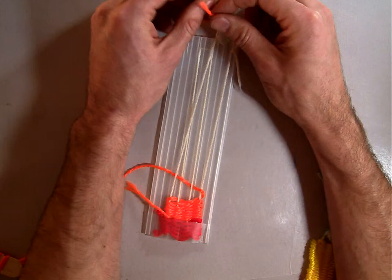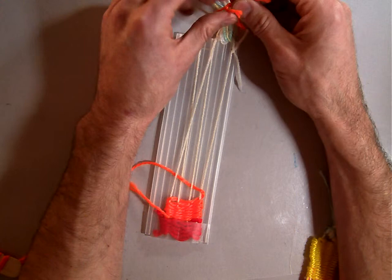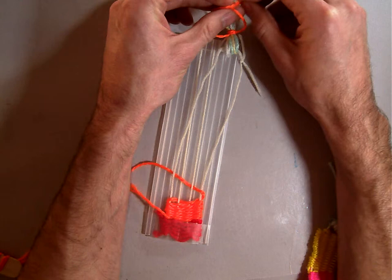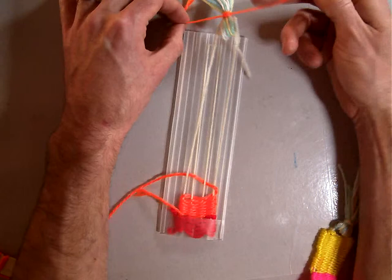You're going to tie a right hand over left hand and under, then pull it tight. And then you're going to take your left hand, this one, over your right hand and under the hole and pull it nice and tight. And that should hold.